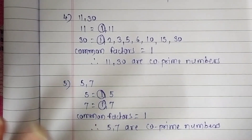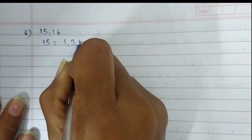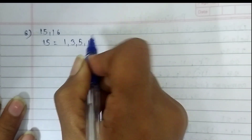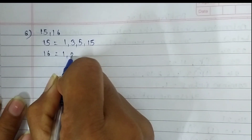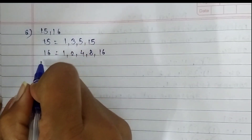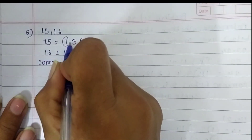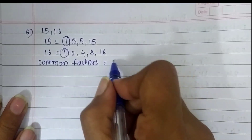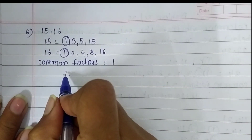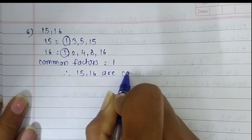Sixth question: 15 and 16. The factors of 15 are 1, 3, 5, and 15. The factors of 16 are 1, 2, 4, 8, and 16. The common factor is only 1. So 15 and 16 are co-prime numbers.